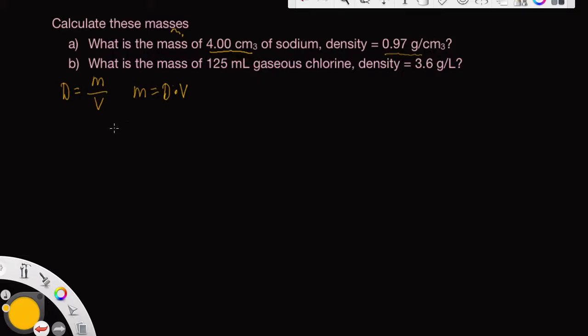So if we plug this in, we get 0.97 grams per cubic centimeter, times 4.00 cubic centimeters. The cubic centimeters cancels.